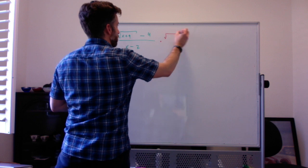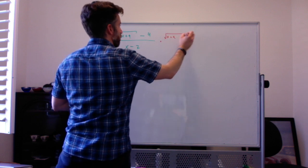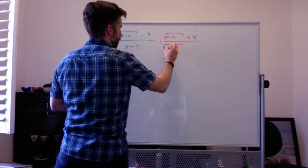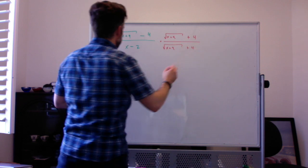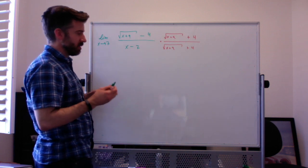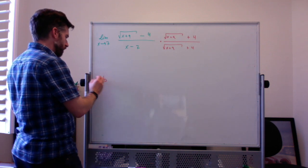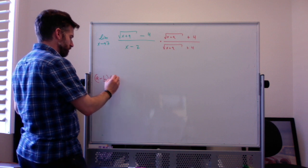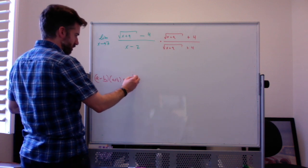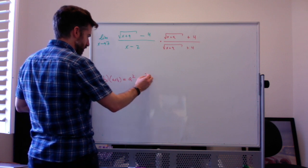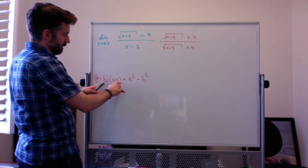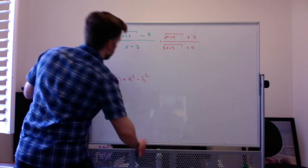So I'm going to multiply by the square root of x plus 9 plus 4, over the same thing, because we're only allowed to multiply by 1. These are conjugates of each other. The conjugate of a minus b is a plus b, and when you multiply conjugates together, you get the first thing squared minus the second thing squared, because the middle terms cancel — a squared plus ab minus ab, those cancel, and minus b squared.